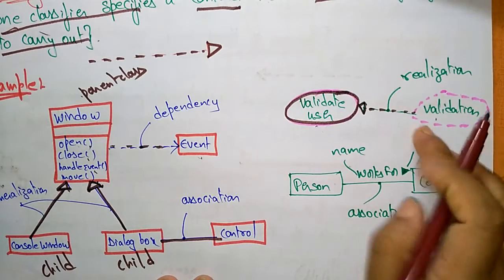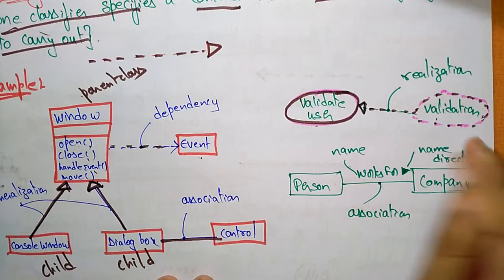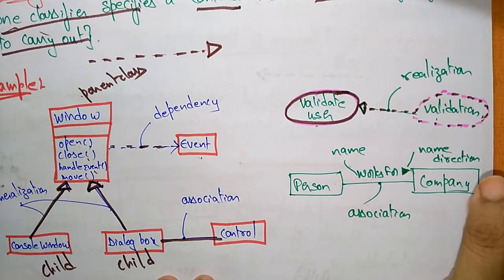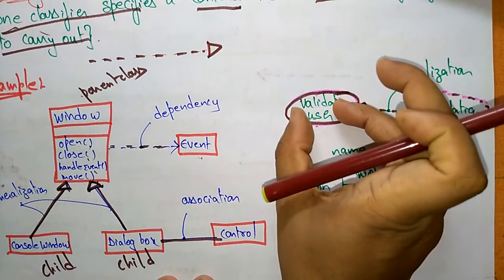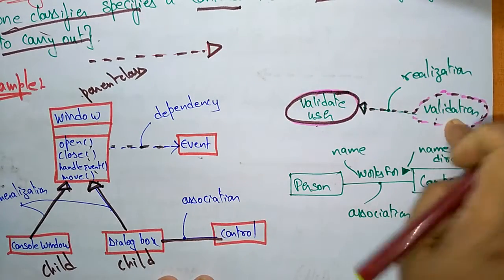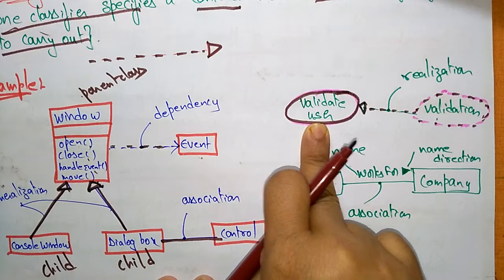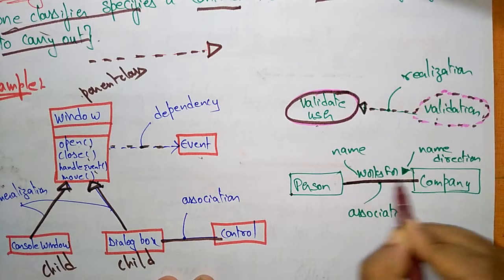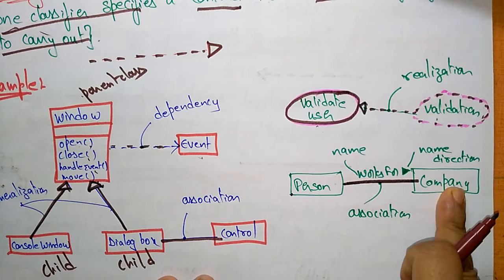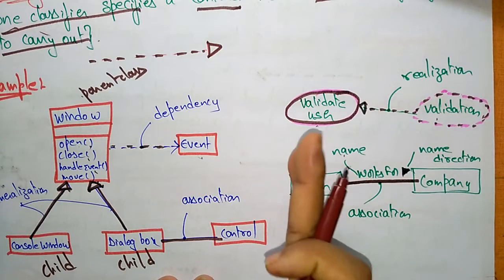The dotted oval shape indicates a collaboration, showing the interaction. The validation code validates the user — it performs an action, which is why validation is realized on Validate User. Also, Person works for Company — this is an association where the name 'works for' and the direction arrow show that a Person works for a Company.